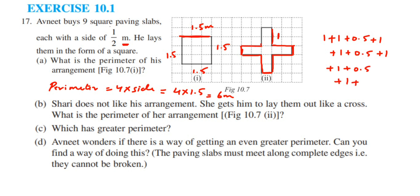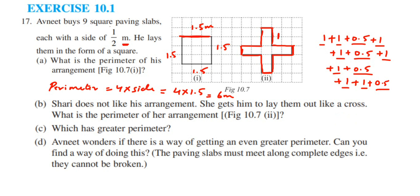Now adding all of these: the 1s sum to 8. Then the 0.5s: 0.5 plus 0.5 is 1, and 0.5 plus 0.5 is again 1. So 8 plus 1 plus 1 is 10. For the second arrangement, the perimeter is equal to 10 meter.